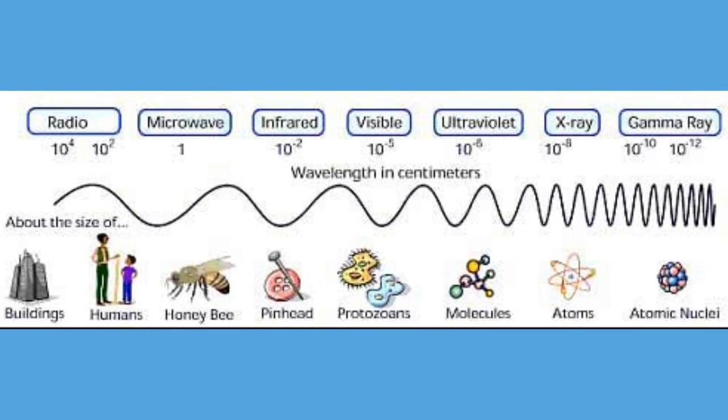That means radio waves can range in size from a grain of rice to the diameter of the Earth. Like other electromagnetic waves, radio waves travel at the speed of light in a vacuum, which is 3 × 10⁸ meters per second.